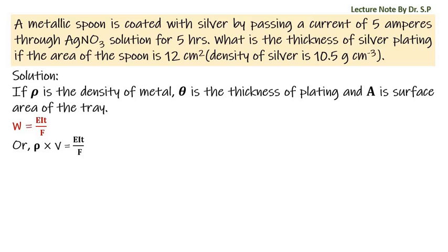So density rho into area A into thickness theta equals chemical equivalent E into current I into time T divided by Faraday constant F. Therefore, the thickness of plating theta equals chemical equivalent E into current I into time T divided by density rho into area A into Faraday constant F.